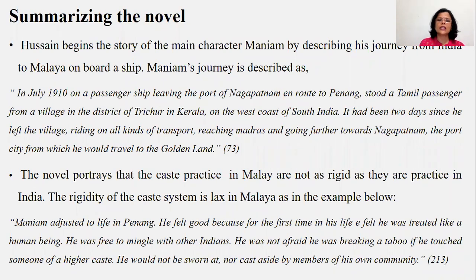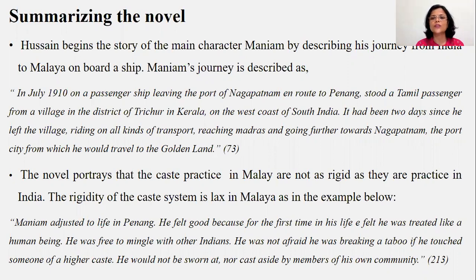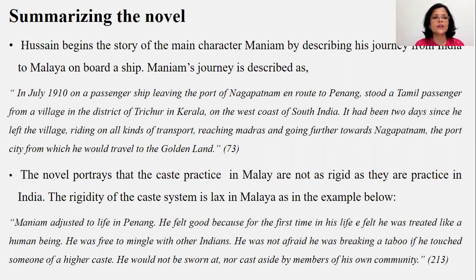He starts his journey from Kerala and reaches Malaysia. It had been two days since he left the village, riding on all kinds of transport, reaching Madras and going further towards Nagapatnam — the port city from which he could travel to the golden land. The means of transport were not so developed at that time, and so the journey was not easy. He had to take different kinds of transport to reach Malaysia. The golden land is considered to be Malaysia.